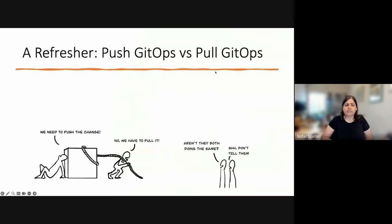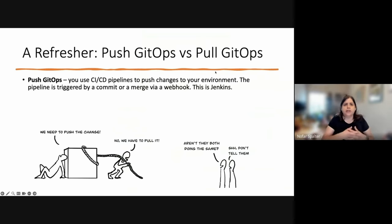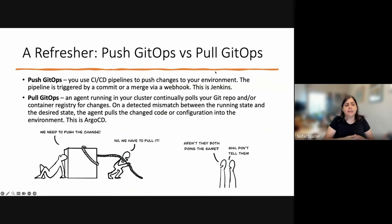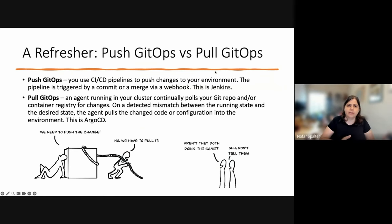A quick refresher on push GitOps versus pull GitOps, since I'll mention it a few times. Push GitOps is your basic CICD pipelines — they push changes to your environment based on a commit or merge via webhook. This is basically Jenkins. Pull GitOps is an agent running in your cluster that continuously pulls your Git repo or container registry for changes, detects a mismatch between what's running in your cluster and what's in the GitOps repo or container registry, and pulls the change into the cluster. This is basically Argo CD and friends.